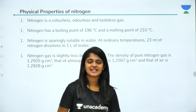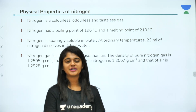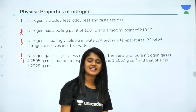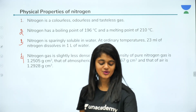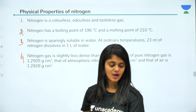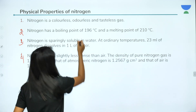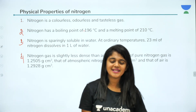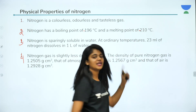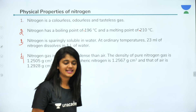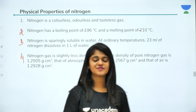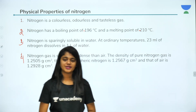Next, let's look at physical properties of nitrogen. First: nitrogen is a colorless, odorless, tasteless gas. Second: the boiling point of nitrogen is minus 196 degrees Celsius — a very low boiling point. The melting point is minus 210 degrees Celsius. Because of its very low boiling point, we can separate it faster.